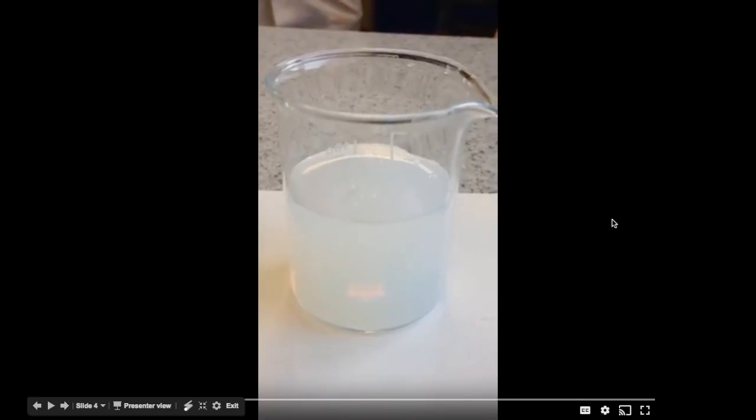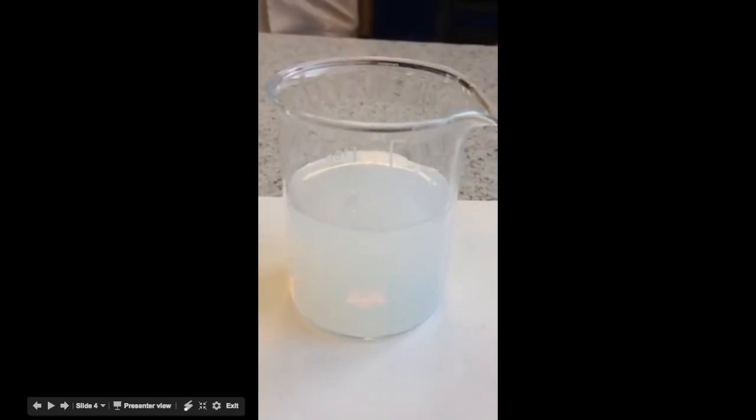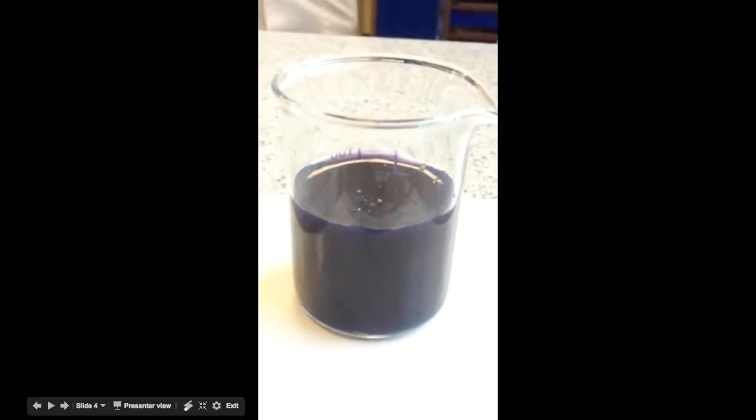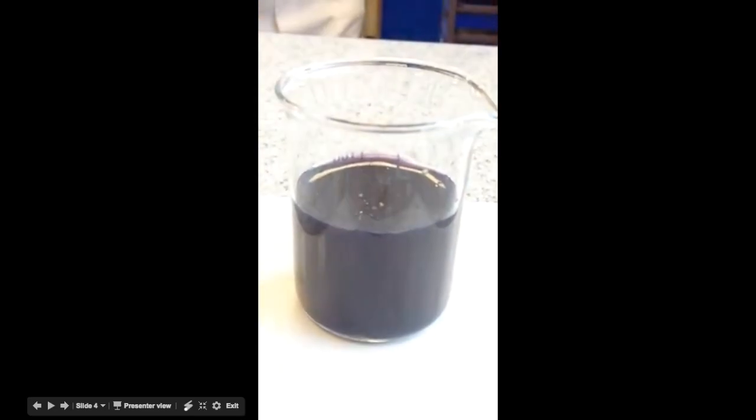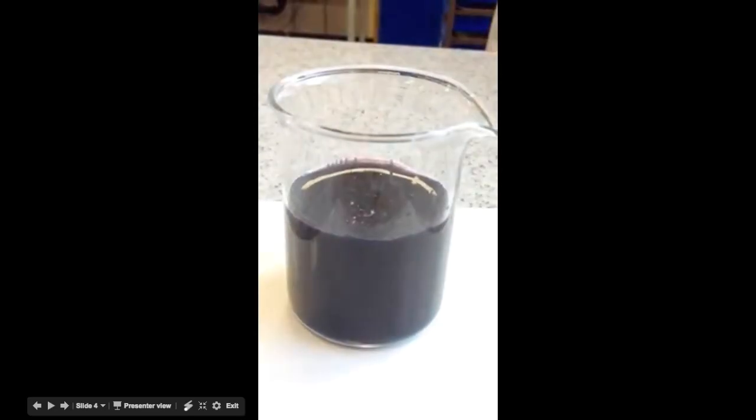The reactants have been placed in the beaker, and when all of the thiosulfate is used up, you can see the starch indicator goes blue-black because of the iodine.